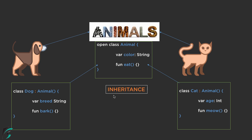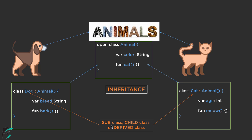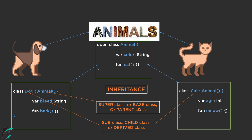So this concept in case of Kotlin is known as inheritance. And now proceeding forward, the class Dog and class Cat is actually known as the subclass, the child class, or the derived class. Similarly, this Animal class is actually known as the superclass, base class, or parent class.